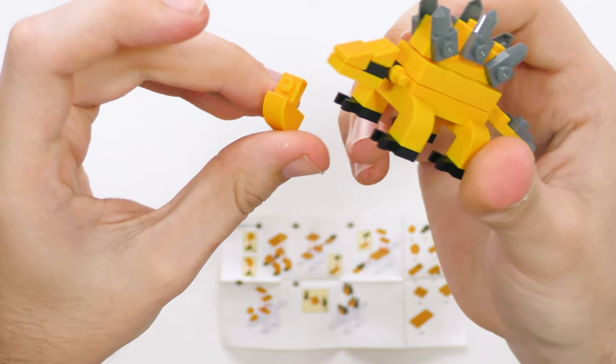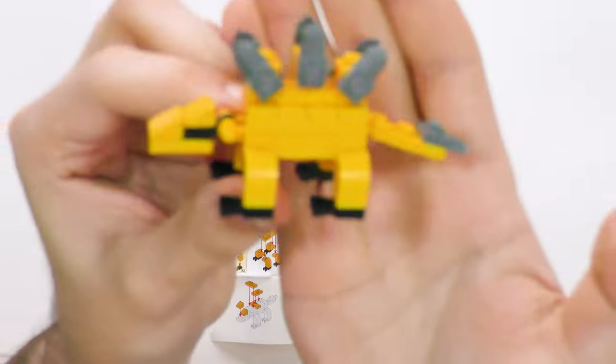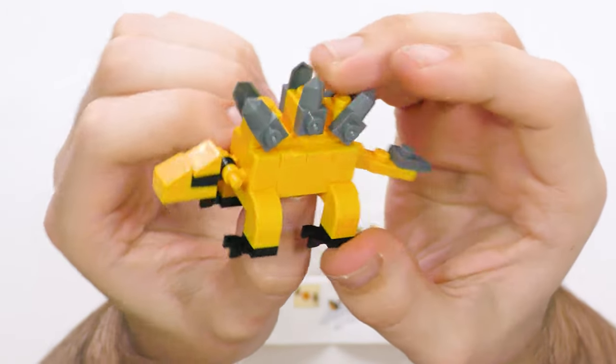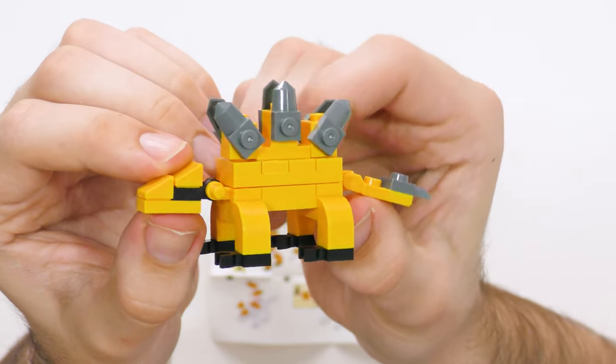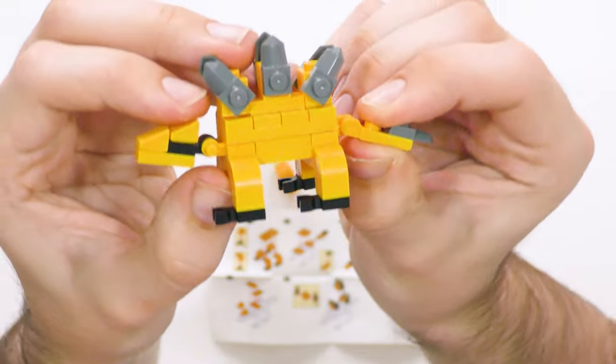And there we go. I've actually got an extra leg. I thought I did something wrong there, but there's only supposed to be four of these. So I've got a bonus one. Hooray. So there we go. That's our stegosaurus. Really cool colors. It's like a yellow and gray one. What I like about these is that they've actually got articulation as well. You can move the head, move the tail.